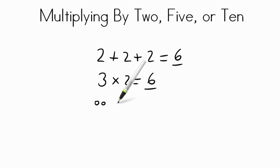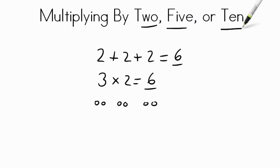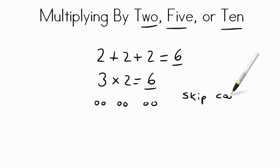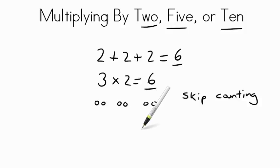2, 4, 6. So knowing how to multiply by 2's, by 5's, and by 10's, what you're going to be doing really is skip counting. You can skip count quite quickly by 2's, by 5's, and by 10's, so that will help you with your multiplication.